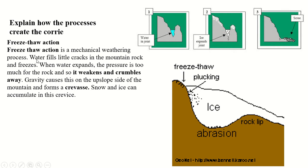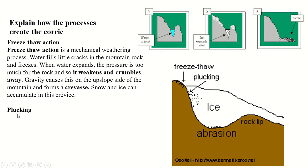Freeze-thaw action is a mechanical weathering process. Water fills little cracks in the mountain rock and freezes, expanding by 10%. The pressure is too much for the rock, so it weakens and crumbles away. Gravity causes this on the upslope side of the mountain, forming a crevice. That small crevice can then fill with snow and ice — remember, accumulation of snow is greater than melting, so snow and ice build up in the crevice.